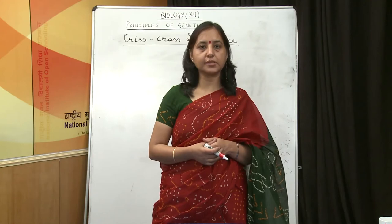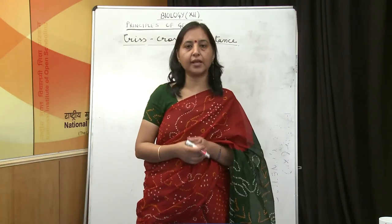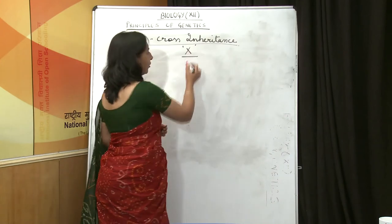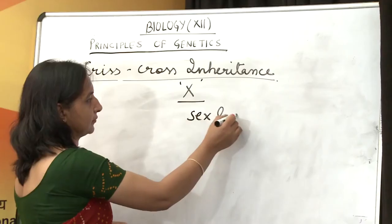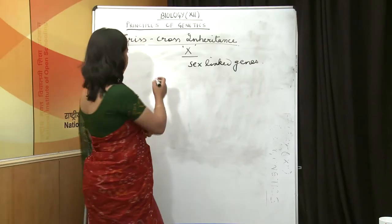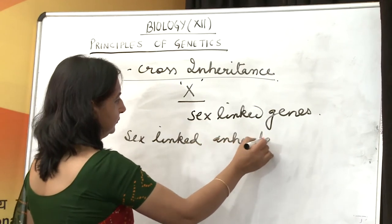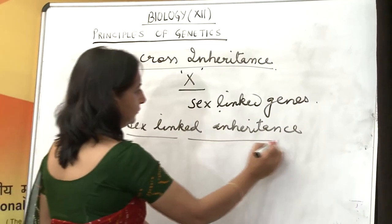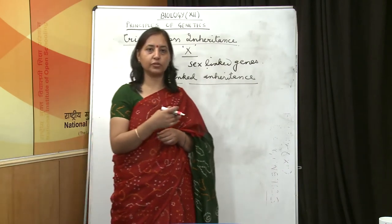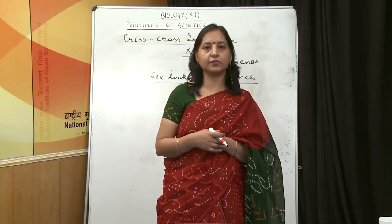Next we talk about criss-cross inheritance. XX type of chromosome is found in females and XY type in males, and the Y chromosome is required for maleness. The genes which are present on the X chromosome are called sex-linked genes. Such sex-linked genes are passed on from a male to his daughter, and from the daughter they are passed on to her grandsons or granddaughters. We can see this with the example of color blindness.